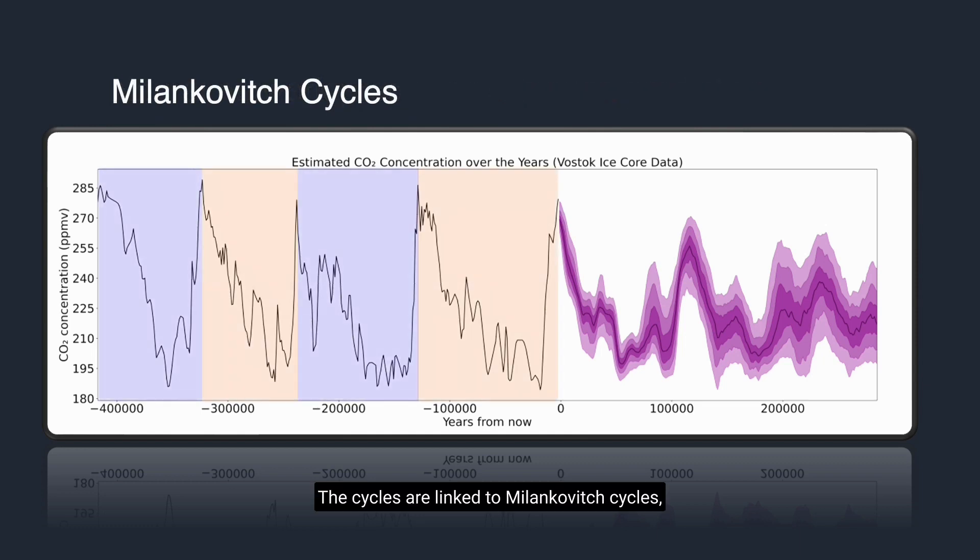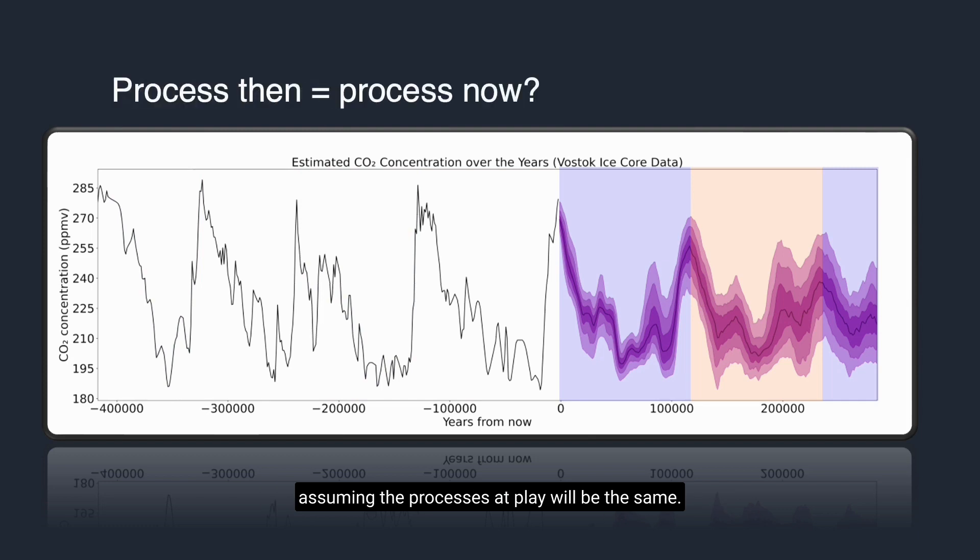The cycles are linked to Milankovitch cycles, which represent the collective effects on the climate of changes in the Earth's movements. To assume similar cycles will continue in the future means assuming the processes at play will be the same.